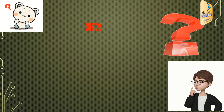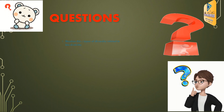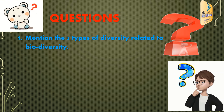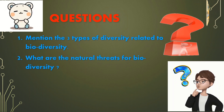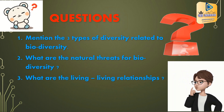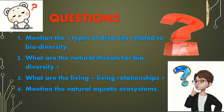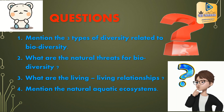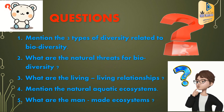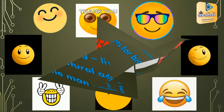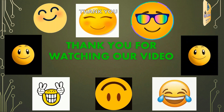You can answer these questions in the comment section: mention the three types of diversity related to biodiversity; what are the natural threats for biodiversity; what are the living-living relationships; mention the natural aquatic ecosystems; and what are the man-made ecosystems. Thank you for watching our video. Goodbye!